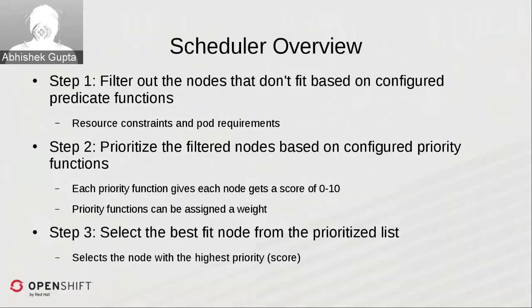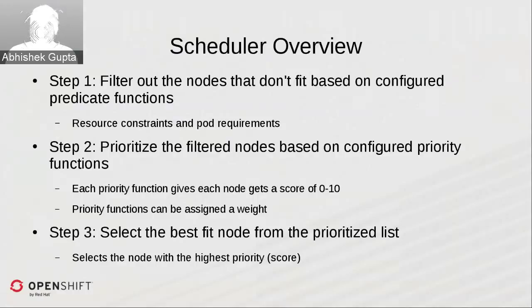Finally, once you have your prioritized list of nodes, you select the best fit — the ones with the highest score. If multiple nodes share the top score, one is selected at random from that list.